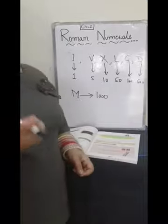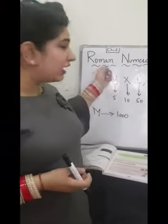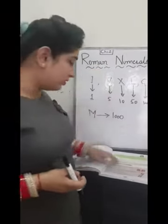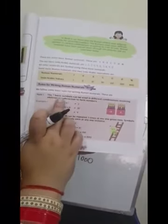We have some rules which you will use in writing Roman numerals. So let's start with the rules. Rule number 1: The basic 7 symbols can be used in different combinations involving addition or subtraction to form numbers.